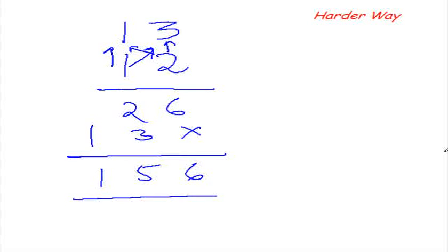Show me the smarter way. So here is your smarter way. The smarter way of multiplying 13 with 12 is the same base method of multiplication that we learned in the last class. And yes, you guessed it right. The base here is 10.